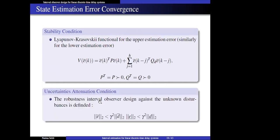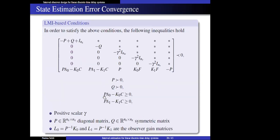The H-infinity formalism is incorporated into the observer design to reduce the effects of disturbances and noises. These results are summarized in an LMI, where gamma is a positive scalar, P is a general matrix, Q is a symmetric matrix, and the observer gains L0 and L1 are obtained by corresponding equations.